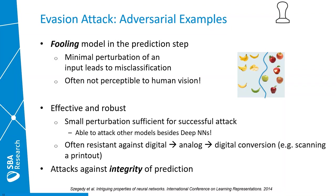Adversarial examples are one prominent form of an evasion attack. Here the adversary is trying to fool the model in the prediction step by adding a minimal perturbation to an input which would lead to misclassification. These perturbations are often not perceptible to human vision because they're really minimal. In practice, if we add a small perturbation to a green apple it would then cross the decision boundary and come to rest on the other side, and therefore get misclassified.